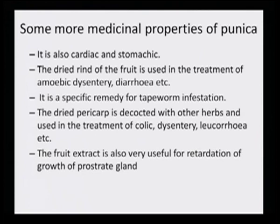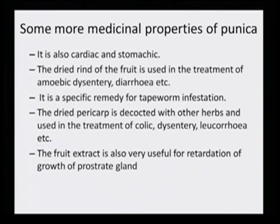It is also cardiac and stomachic. The dried rind of the fruit is used in the treatment of amoebic dysentery and diarrhea. It is a specific remedy for tapeworm infection. The dried pericarp is decocted with other herbs and used for the treatment of colic, dysentery and leucorrhea. The root extract is also very useful in retardation of growth of the prostate gland. The decoction of Punica fruit rind taken internally has been observed to be effective in these various medicinal situations.